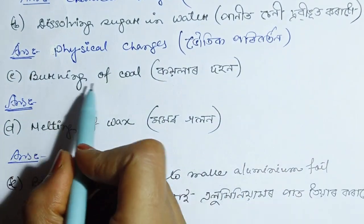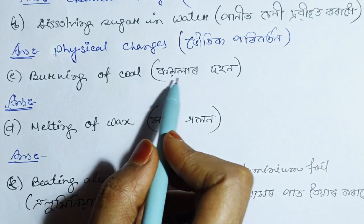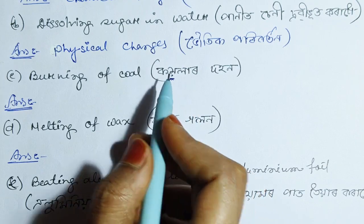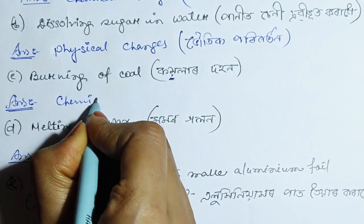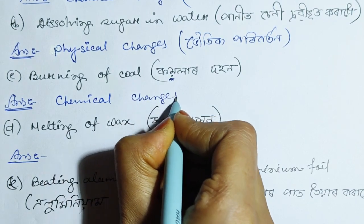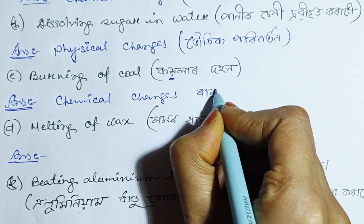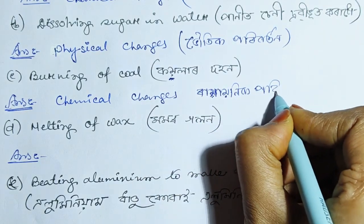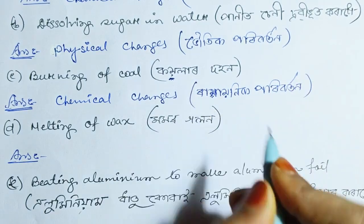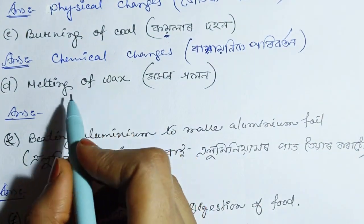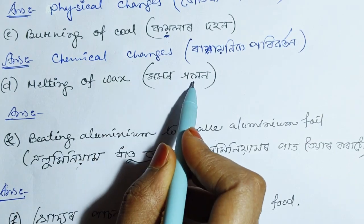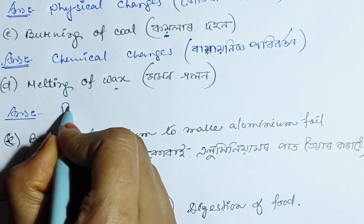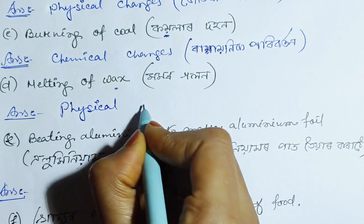Number C: Burning of coal is a chemical change. Number D: Melting of wax is a physical change.